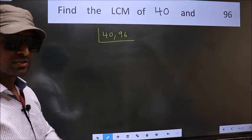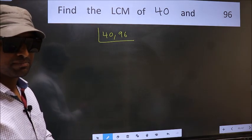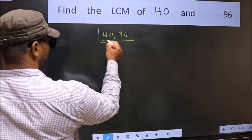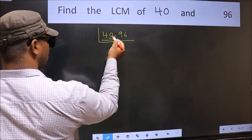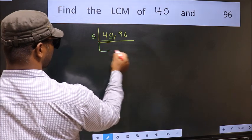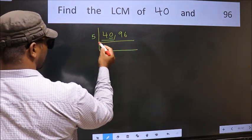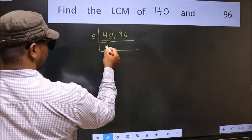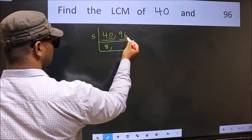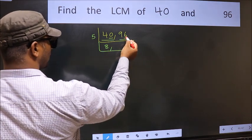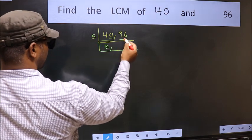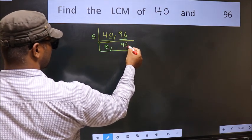Now focus on the first number, which is 40. The last digit is 0, so directly take 5. When do we get 40 in the 5 table? 5 times 8 is 40. The other number is 96. Last digit is neither 0 nor 5, so this is not divisible by 5, so we write it down as it is.